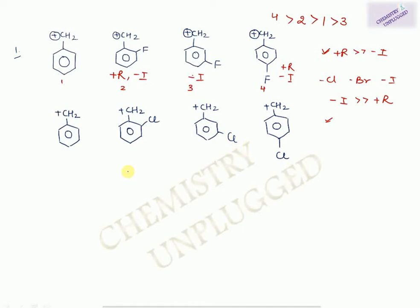For chlorine-substituted carbocations, since minus I effect is stronger than plus R for chlorine: structure 1 with no chlorine has maximum stability. When chlorine is at maximum distance (para), minus I effect is weaker, so structure 4 is next. Then structure 3, and least stability for structure 2 because the chlorine is closest to the CH₂⁺. We don't consider plus R effect here since minus I is much stronger.